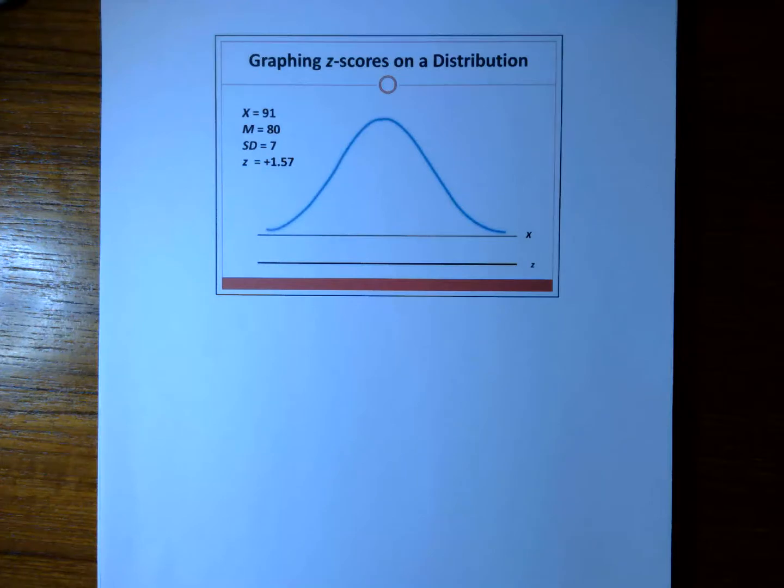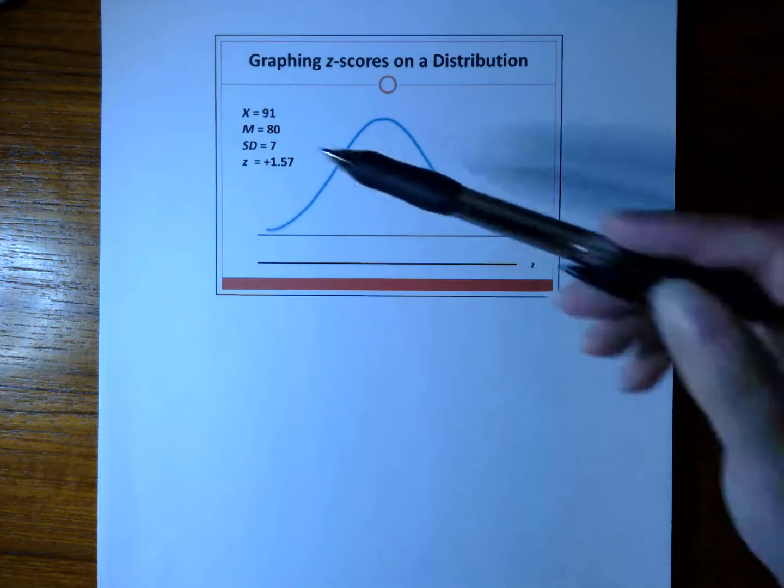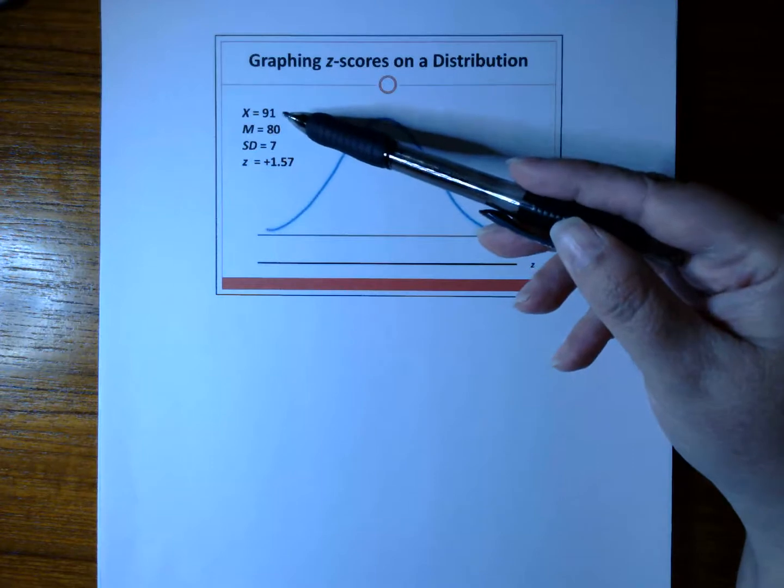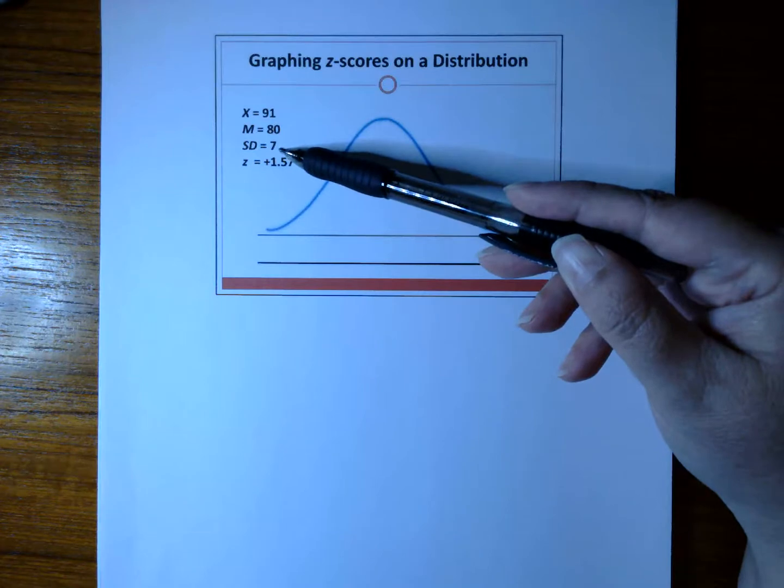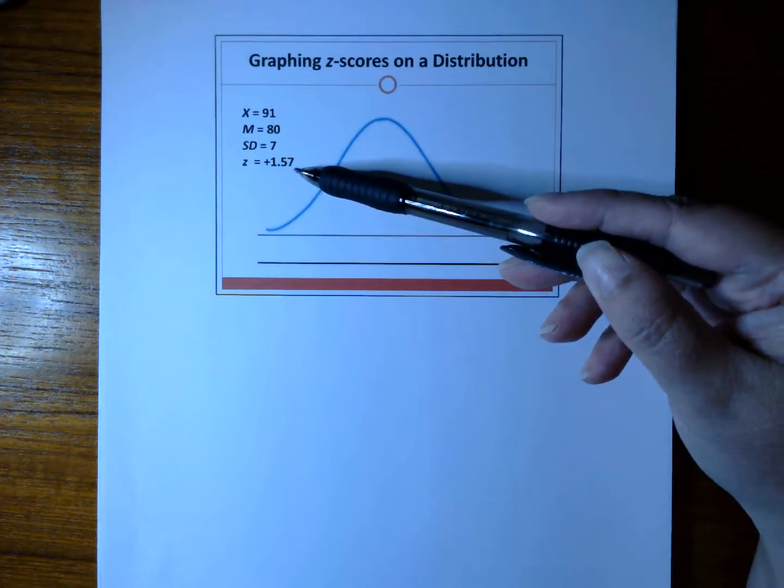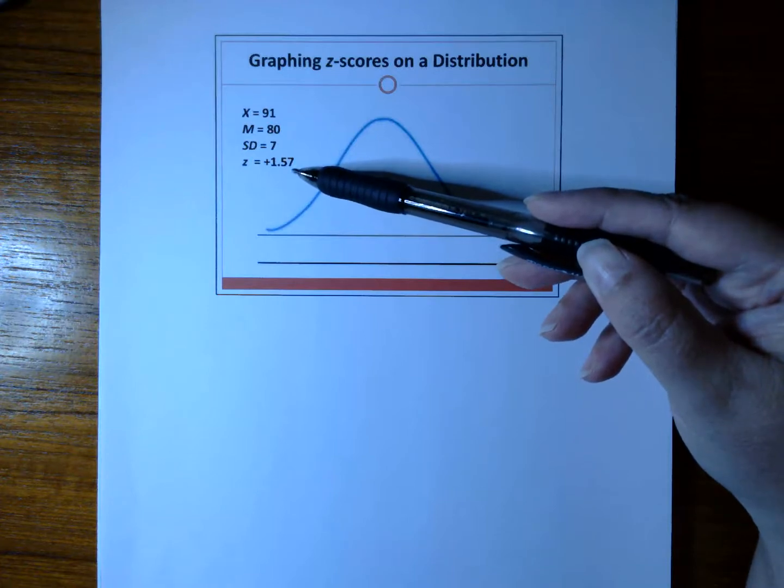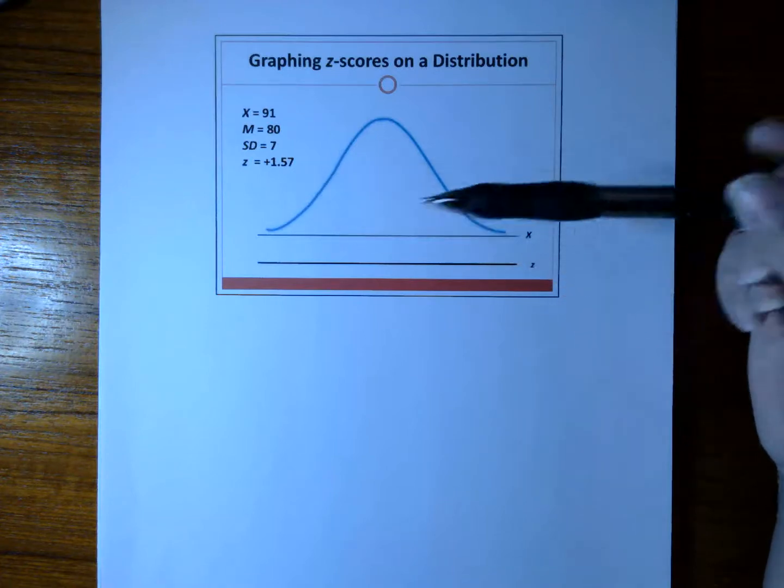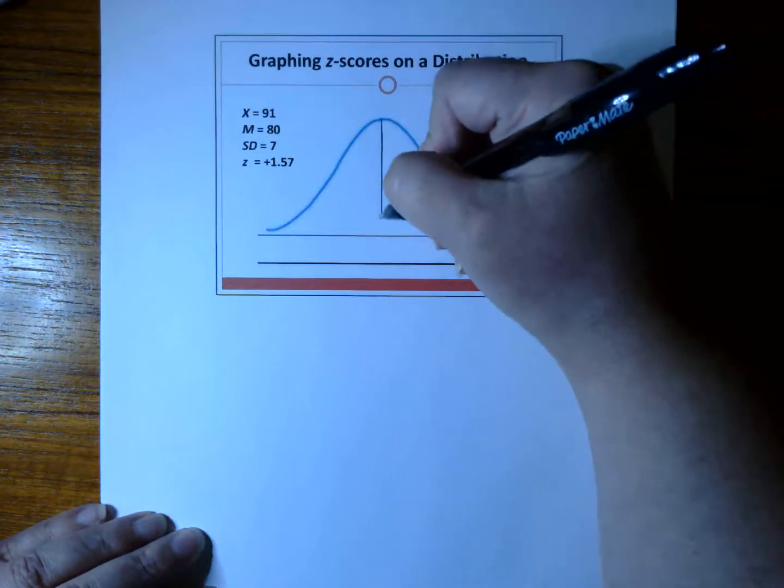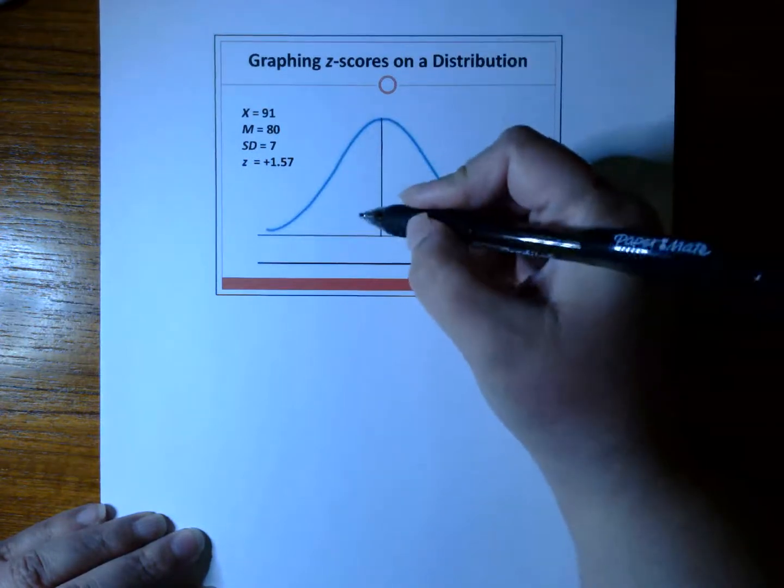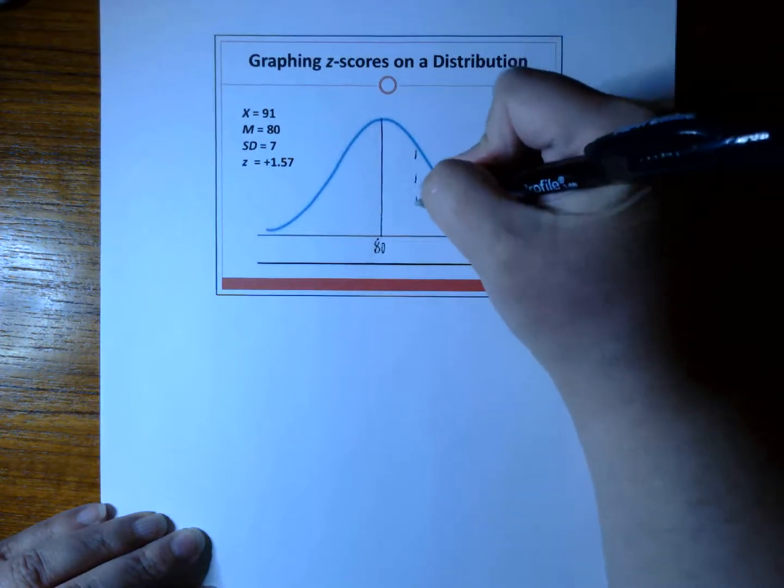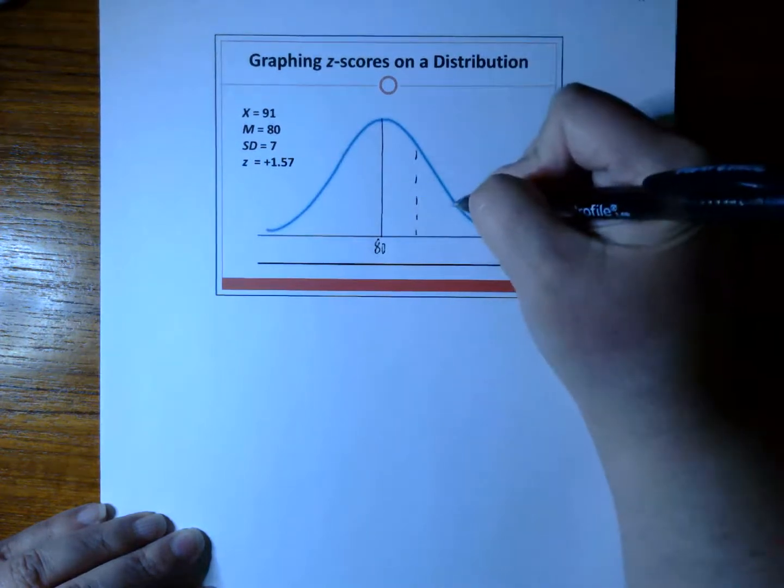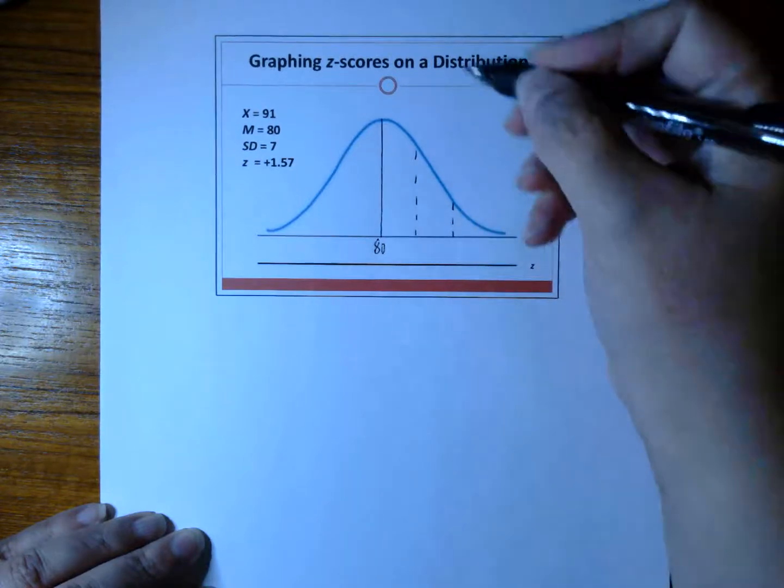Let's use the information from the previous example. The student reported an X of 91. The class had a mean of 80 and an SD of 7, and we just calculated the Z-score, which was a plus 1.57. Let's draw this on the distribution. Our mean is always in the middle, and our mean here is 80. One standard deviation above the mean is here, and then two standard deviations above the mean.